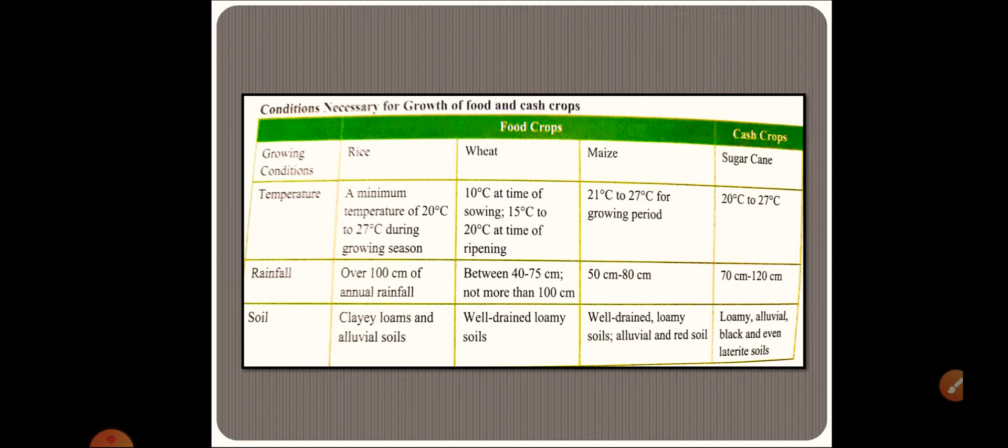For rice, first of all we are seeing the food crop rice. For rice, you can see that a minimum temperature of 20 degrees Celsius to 27 degrees Celsius is required to grow. Rainfall is required over 100 centimeters, and clay loams and alluvial soil is required for it to grow.